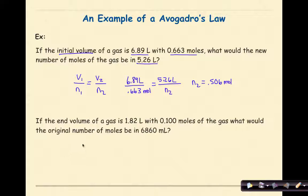Let's look at another example. If the end volume of a gas is 1.82 liters with 0.1 moles of the gas, what would the original number of moles be in 6,860 milliliters?